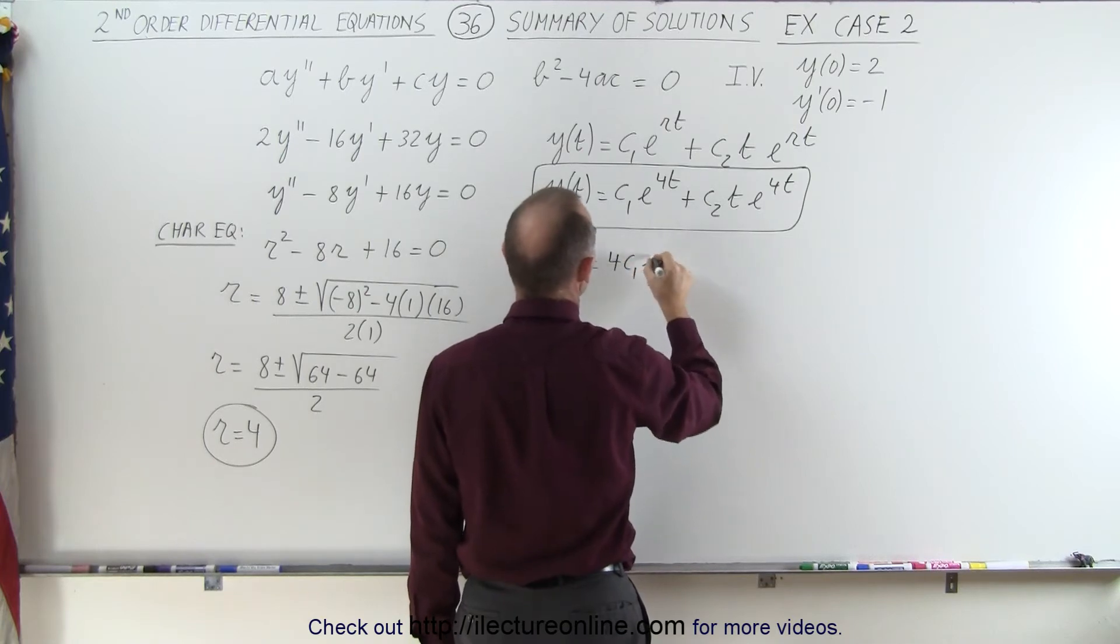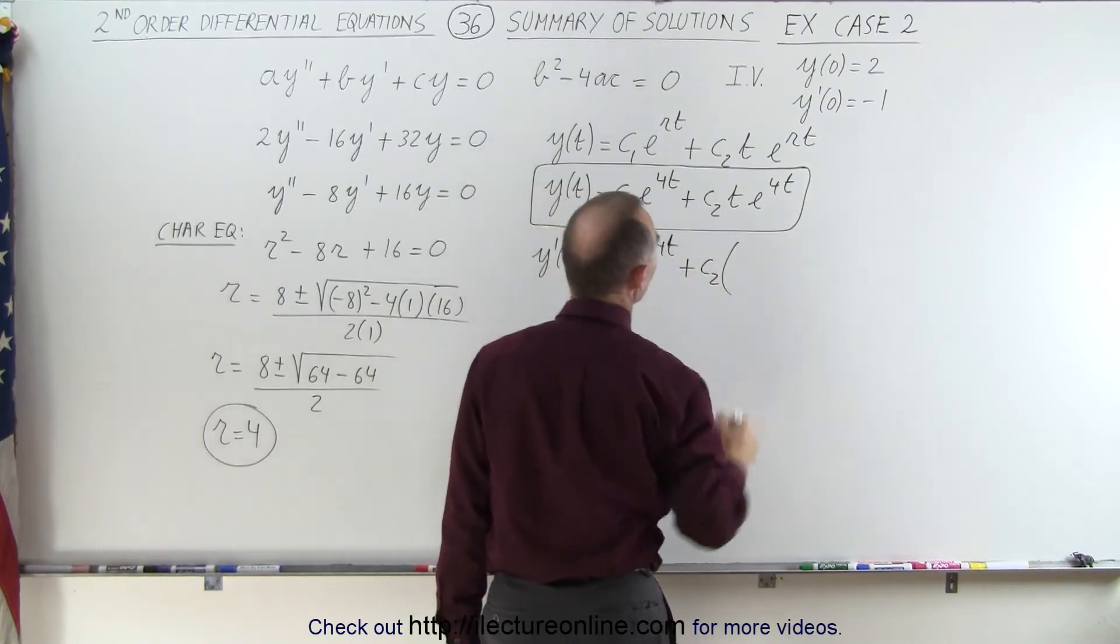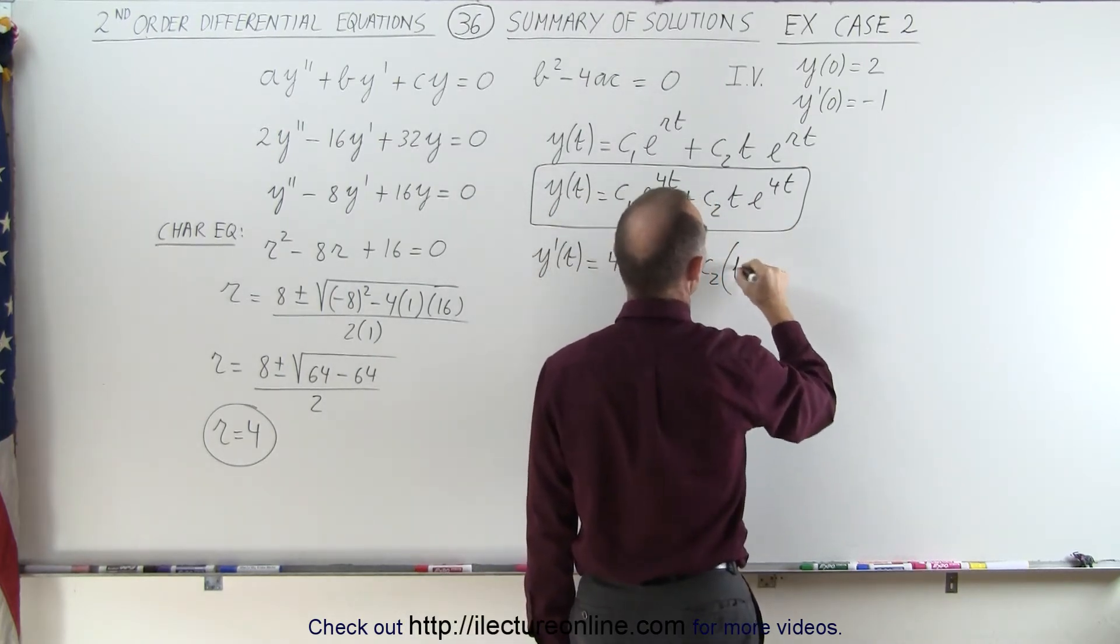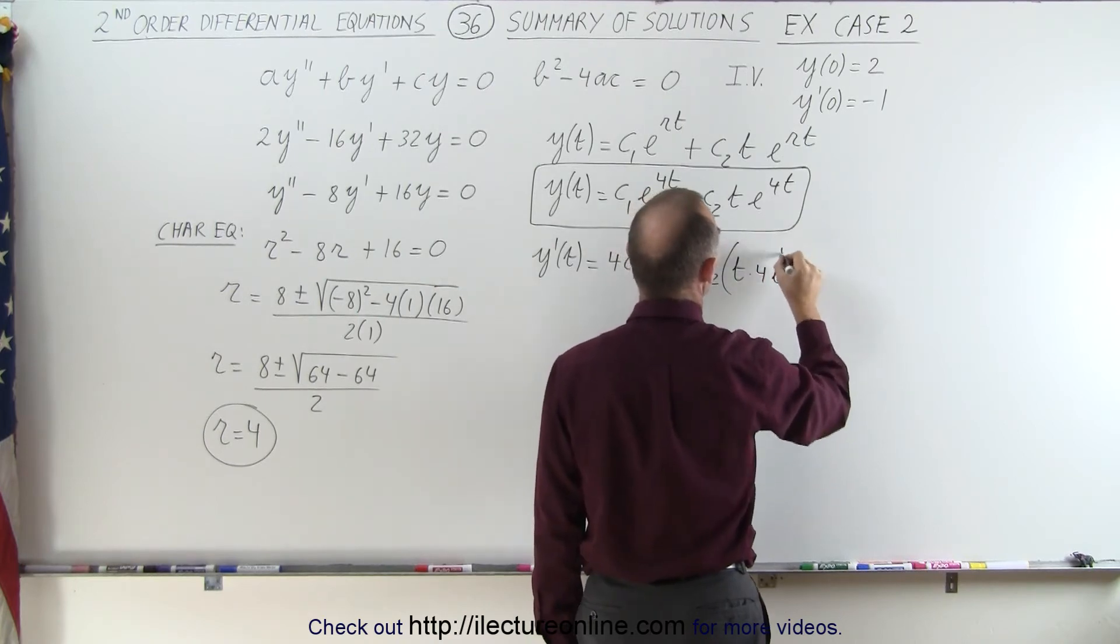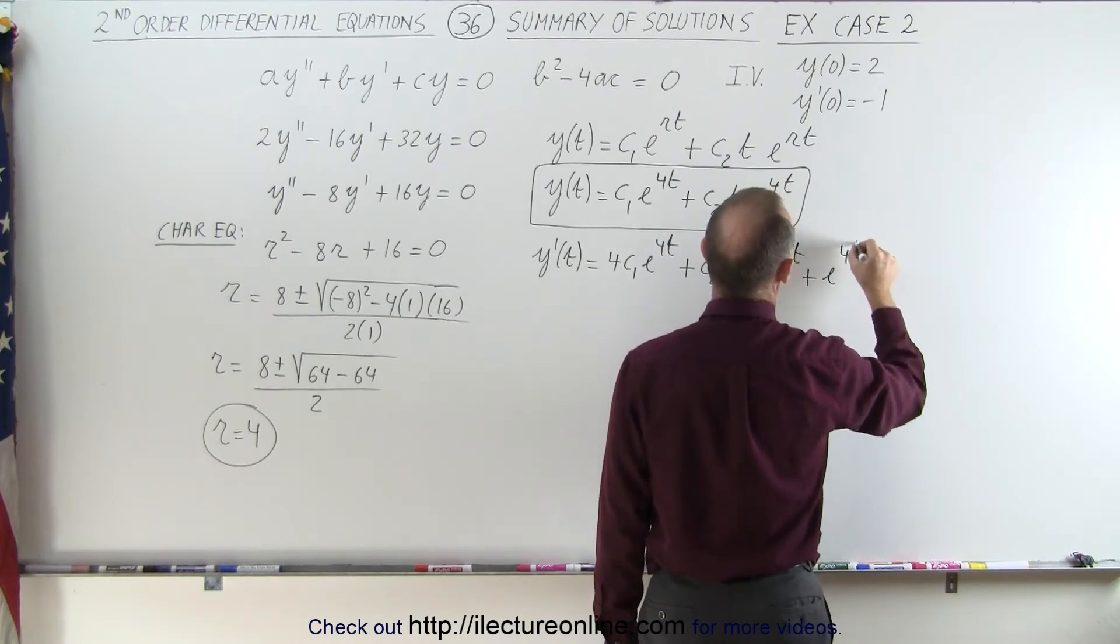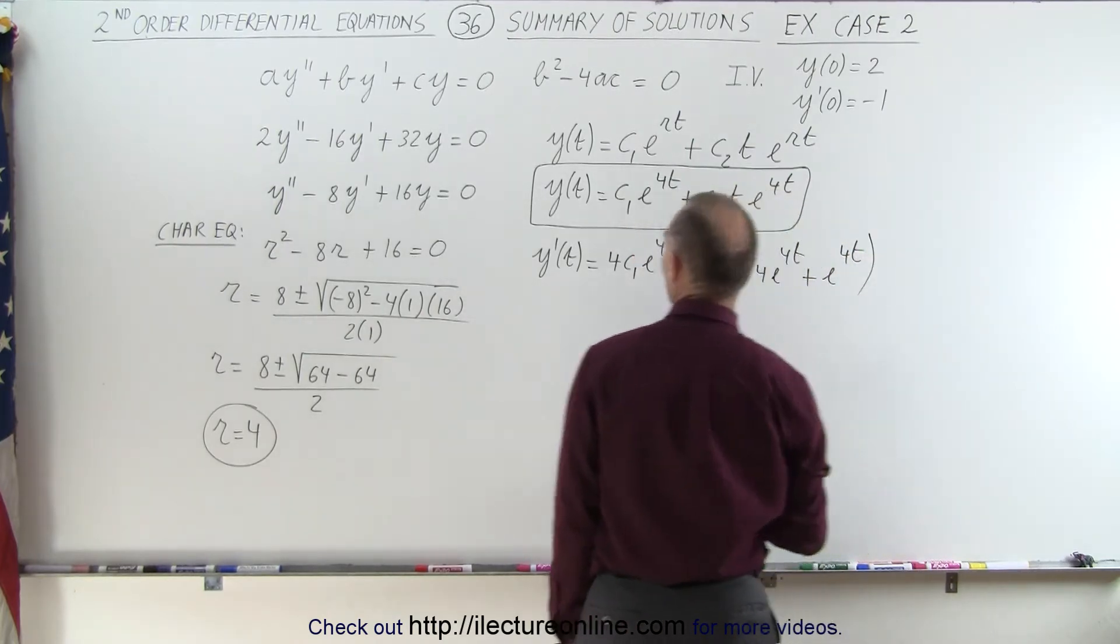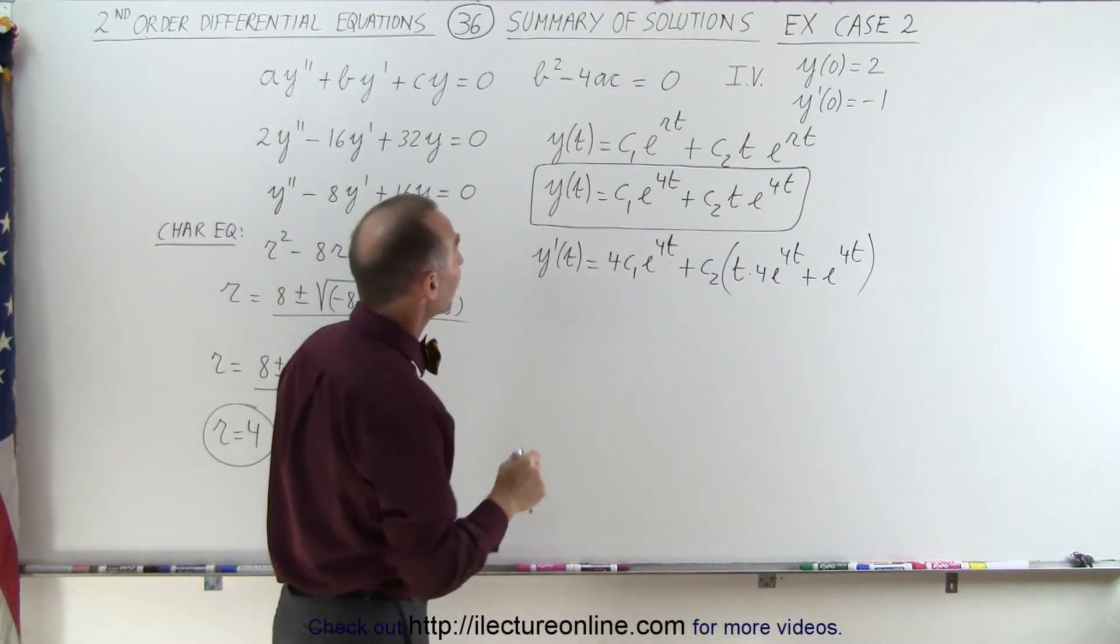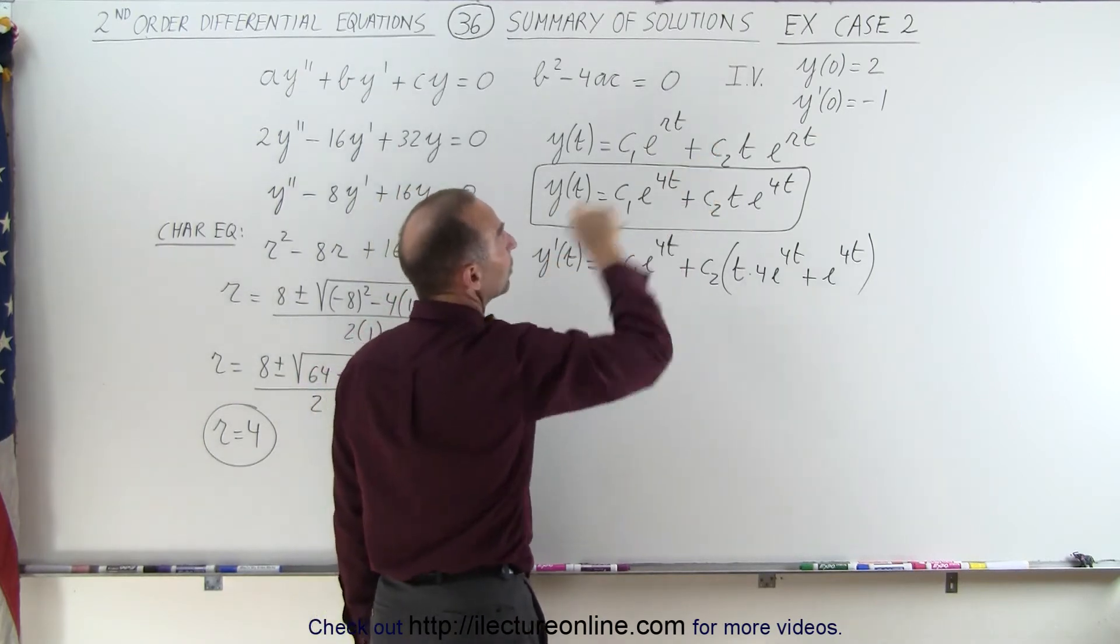which is 4c1 e to the 4t plus c2 times the derivative of this, which is a product, so it's the first times the derivative of the second, so times 4e to the 4t, plus the second, e to the 4t, times the derivative of the first, which is 1. So now that we have y prime as well, we can now go ahead and evaluate both the function y and y prime at the initial conditions.